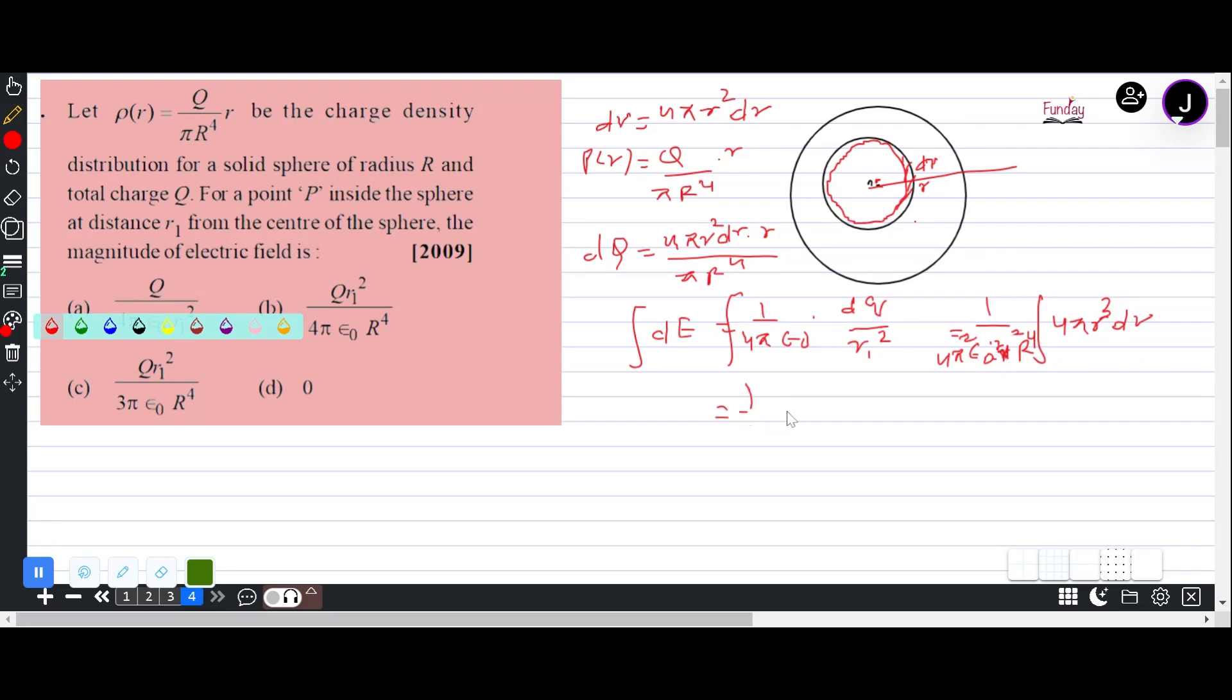Right, so where do we reach? 4πε₀r₁²R⁴, and 4πr³ will integrate to 4πr⁴/4. r^n integrates to r^(n+1)/(n+1), so the 4s balance out. R⁴ and r⁴, and you have two πs, so one π cancels out. After much back and forth cancellations, we get Q × r₁²/(4πε₀R⁴).